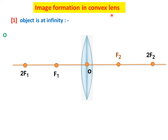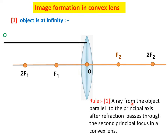Image formation in convex lens — the first situation is when the object is at infinite distance. Here O is our object at infinite distance. This is our convex lens, O is the optical center, this line is our principal axis, and F2 is the second principal focus. The first rule: a ray of light from the object parallel to the principal axis, after refraction, passes through the second principal focus in a convex lens.